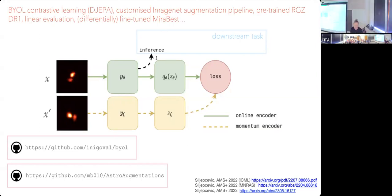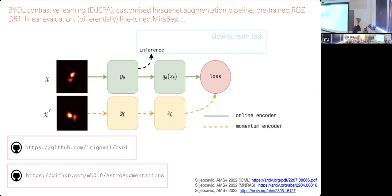A question has come up asking basically how sensible is the FR1/FR2 classification, and should we remove this assumption and use ML to determine how many classes of radio galaxies there are? The answer is, I suspect that's the way we're going. I suspect we would use a self-supervised model like this one to build a representation and then look for continuums of structure within our galaxies and then associate those with other physical parameters.